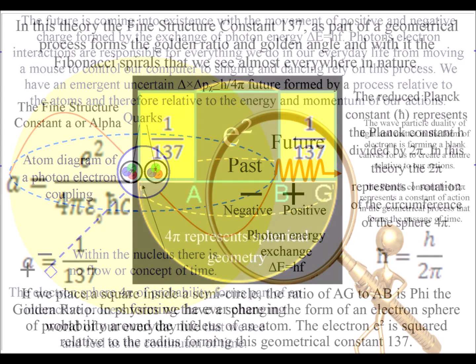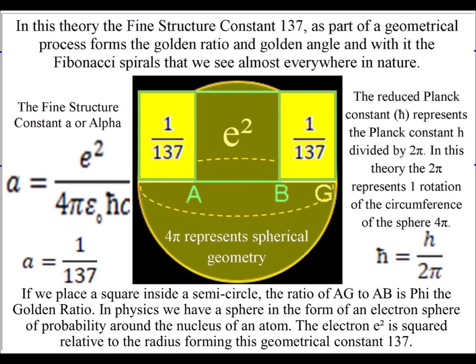The photon and electron are different aspects of the same geometrical process.